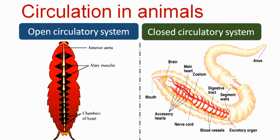In the open circulatory system, blood is distributed throughout all parts of the body — it is not restricted to a particular region or vessel. Some part of blood is present in blood vessels and some part is also present in the heart.